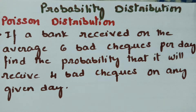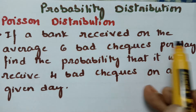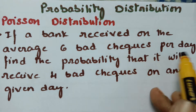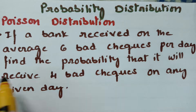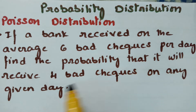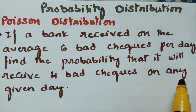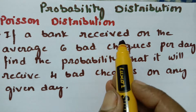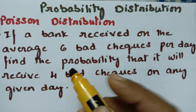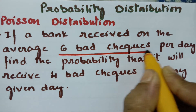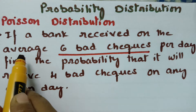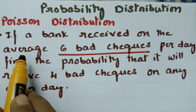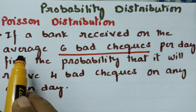This video is on Poisson distribution. We are going to solve a problem: if a bank received on an average of six bad checks per day, find the probability that it will receive four bad checks on any given day. Since an average is given, we have to select the Poisson distribution.